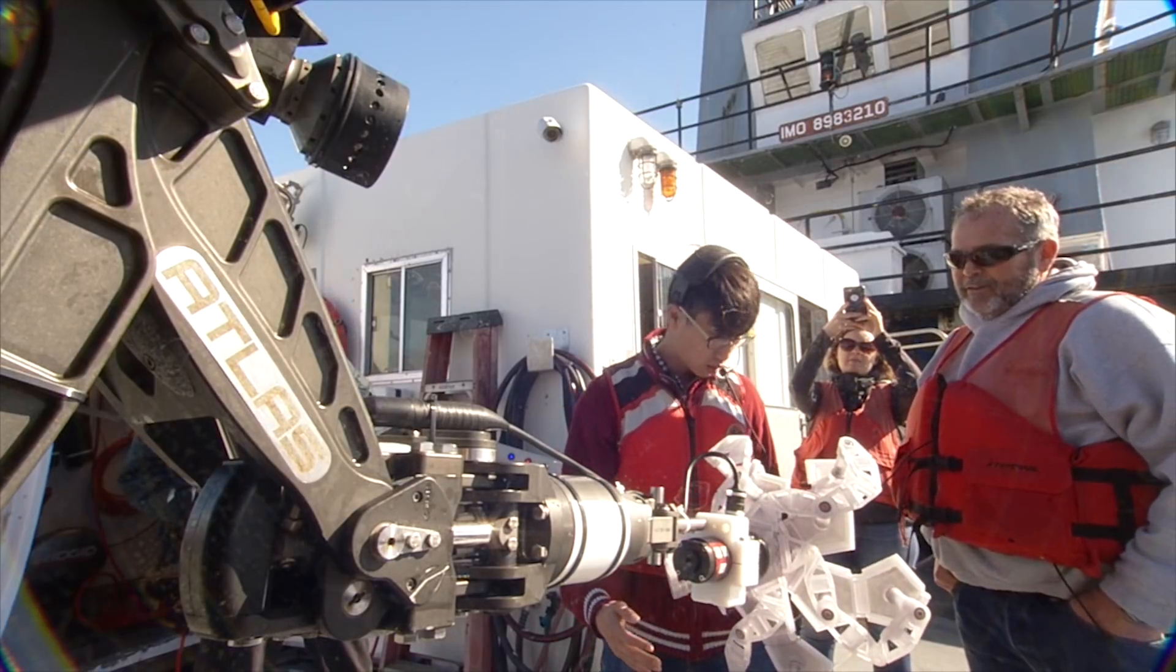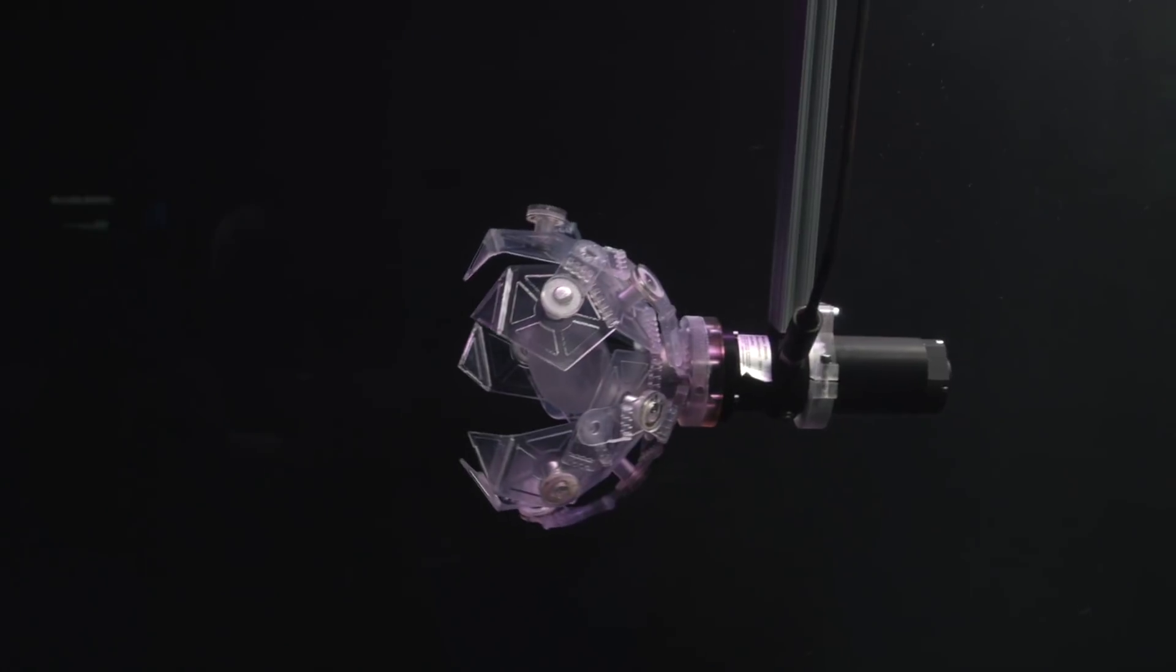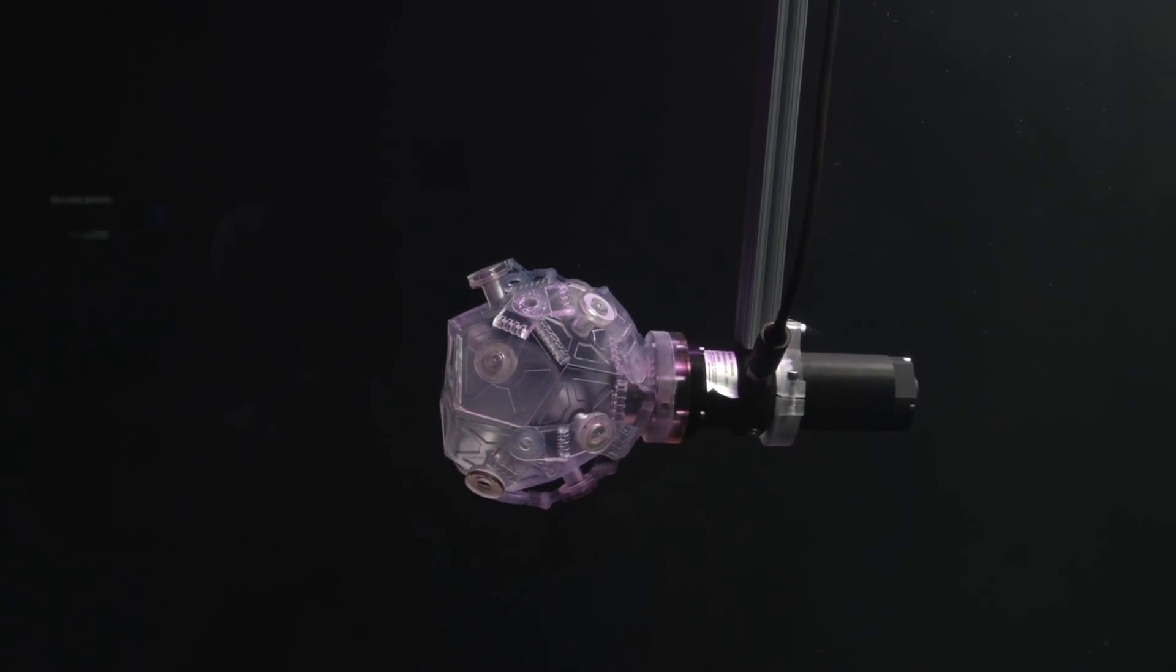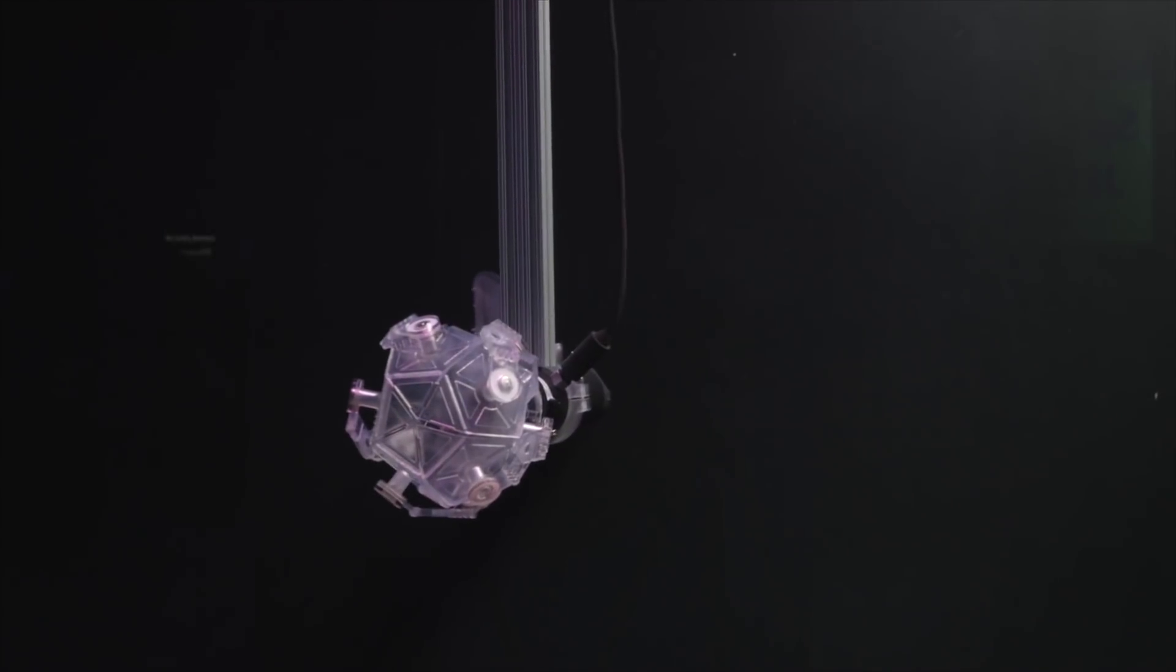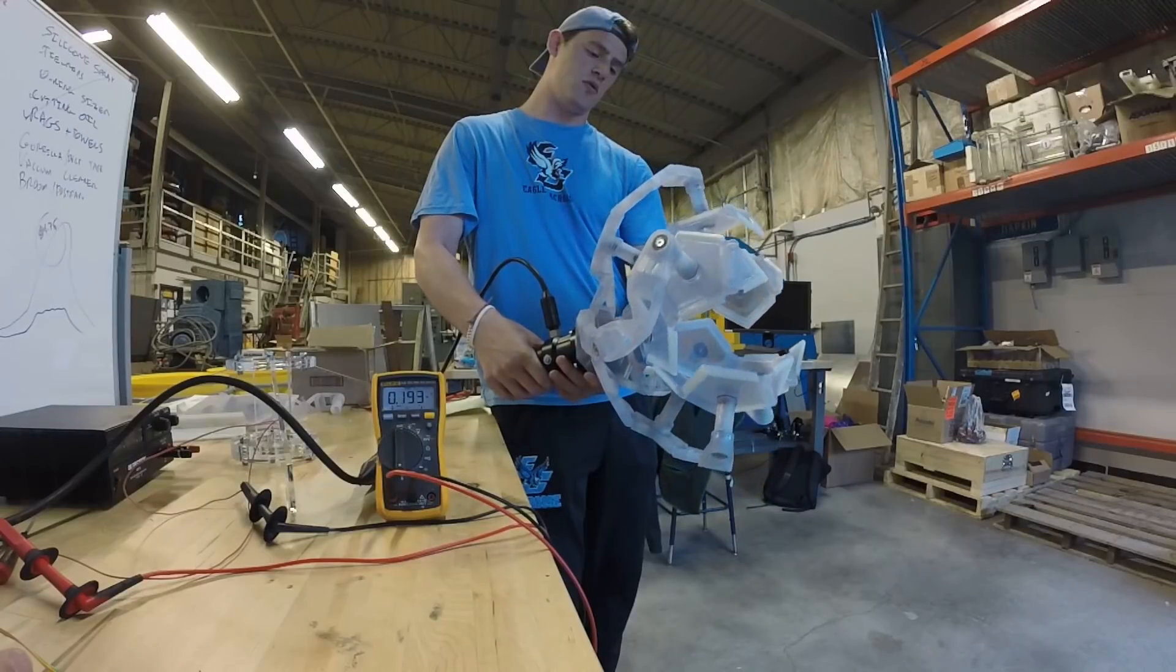Researchers from the Wyss Institute at Harvard University invented a prototype gentle mechanical hand that can safely capture deep-sea creatures. The device is composed of two-dimensional shapes that fold to create a three-dimensional enclosure.